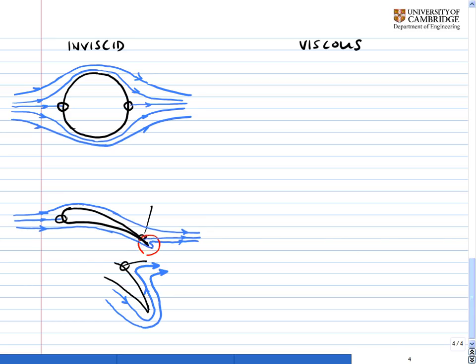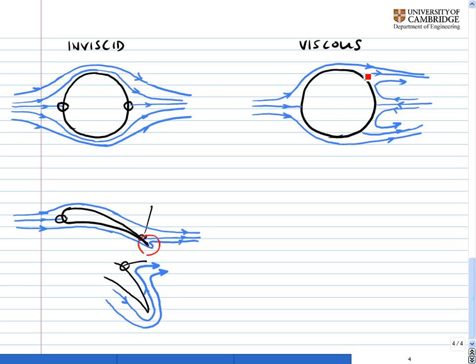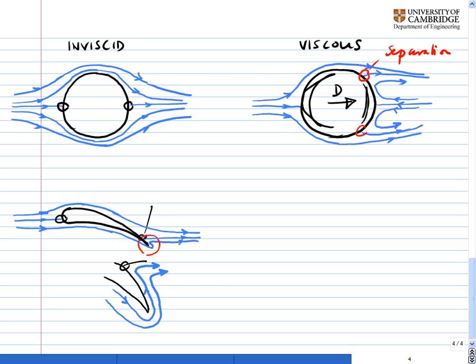So let's look at the cylinder in a viscous flow. We know that in a viscous flow the flow separates at two points, giving two separation points, and we get a little bit of reverse flow around the back of the cylinder. You can look at the pressure around the front and the back of the cylinder, and from that you'll realise there is a drag force on the cylinder. In this case, though, the viscous flow is still symmetric top to bottom, so there's still no lift.